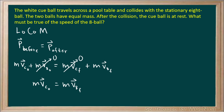The reason I've been using just the variable m without subscripts throughout is because we're told that the two balls have the same mass. So this m has the same value on both sides, which means we can cancel the two by dividing both sides of the equation by m. Doing that, we're left with the initial velocity of the cue ball equal to the final velocity of the eight ball.